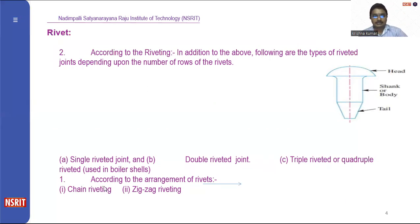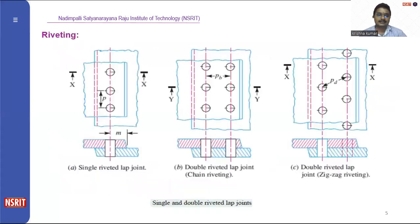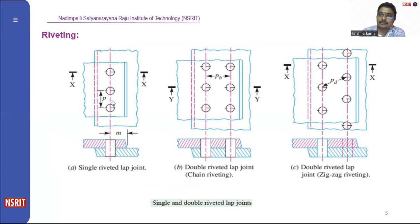Depending upon the arrangement, it may be a chain riveting process or it may be a zigzag riveting process. Looking at the diagram, these are the two blue color representations of two different plates which are overlapped over each other, with rivets placed in a single row or single column.